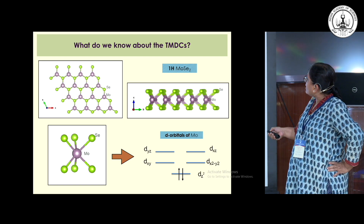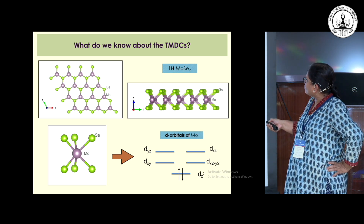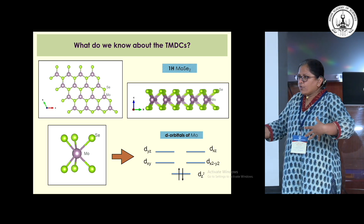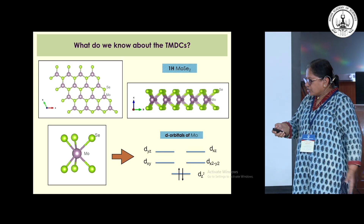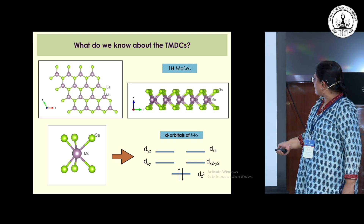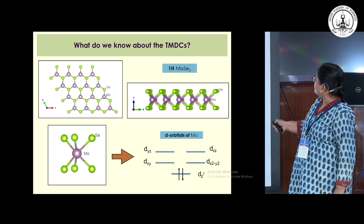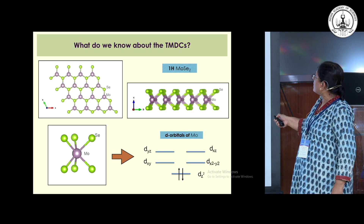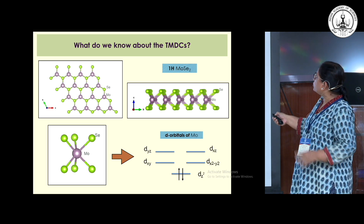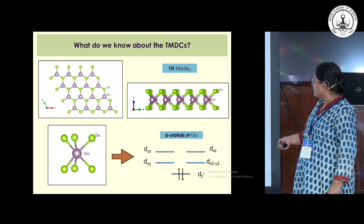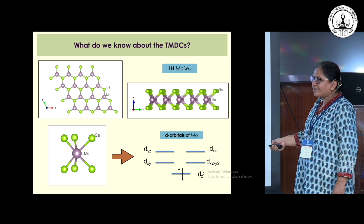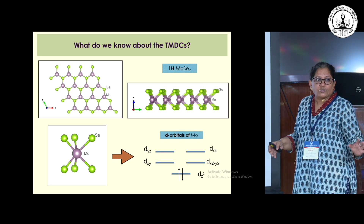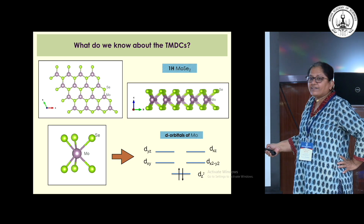Each molybdenum atom has six selenium atoms around it, and these selenium atoms form a particular crystal field which lifts the degeneracy of the d orbitals. Instead of five d orbitals being degenerate, you have a particular ordering of d orbitals in this compound. A formal valency count shows that molybdenum should have two d electrons, which occupy the lowest level, leaving higher levels unoccupied — giving us a semiconductor by this naive picture.